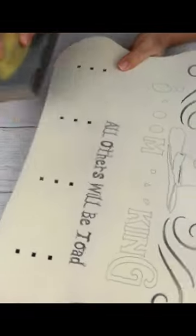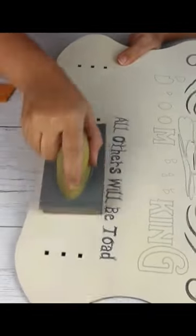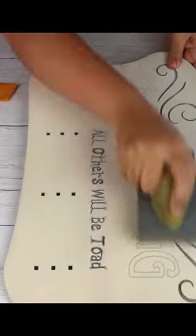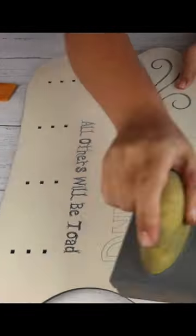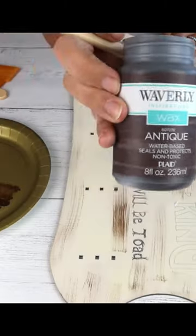I wanted this sign to kind of have an antique look. So I took a sander and I just went along all of the edges and then different parts throughout the sign and just buffed some of that paint off so that then I could put some stain on.